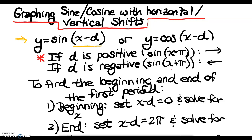In this video, we're going to talk about graphing sine and cosine functions with horizontal shifts. The next video will cover vertical shifts, so they do come in pairs. The very first thing we're going to do is look at the equation of a sine or cosine function that has a horizontal shift.